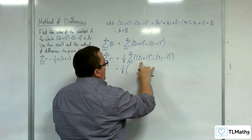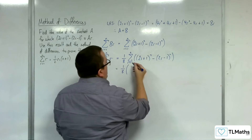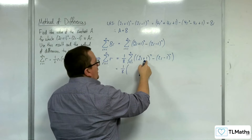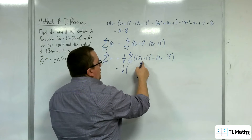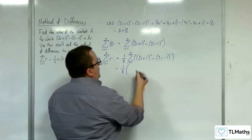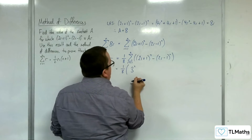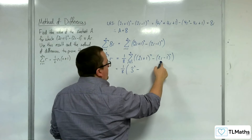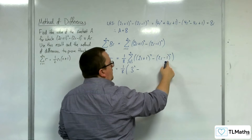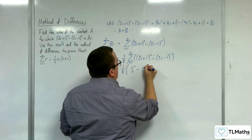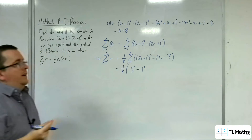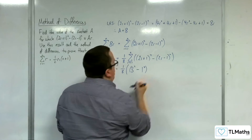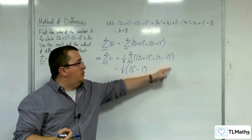We substitute in r=1 first. The first term we're going to get is 2×1+1, which is 3. So we're going to get 3² first. And then substituting r=1 into the second part, take away 2×1 take away 1, which is 1. So 1². That is the first term when I substitute r=1 into this expression.